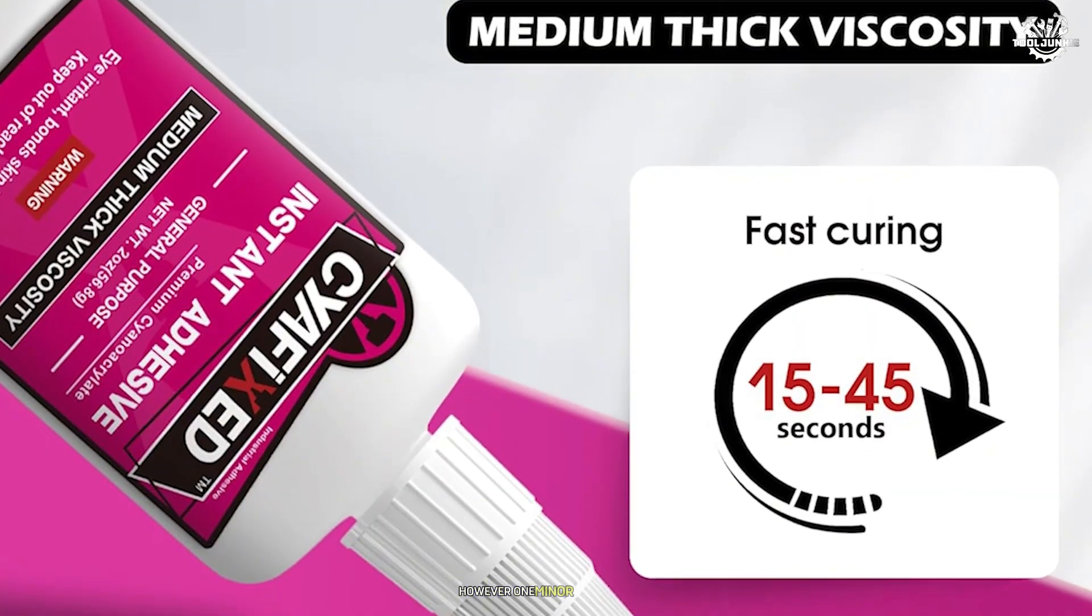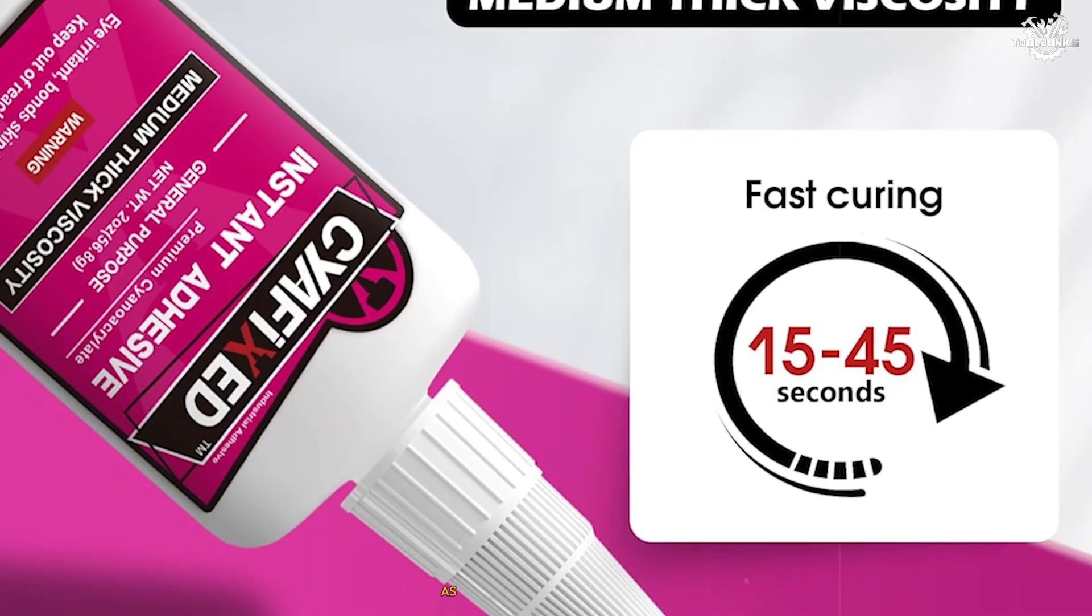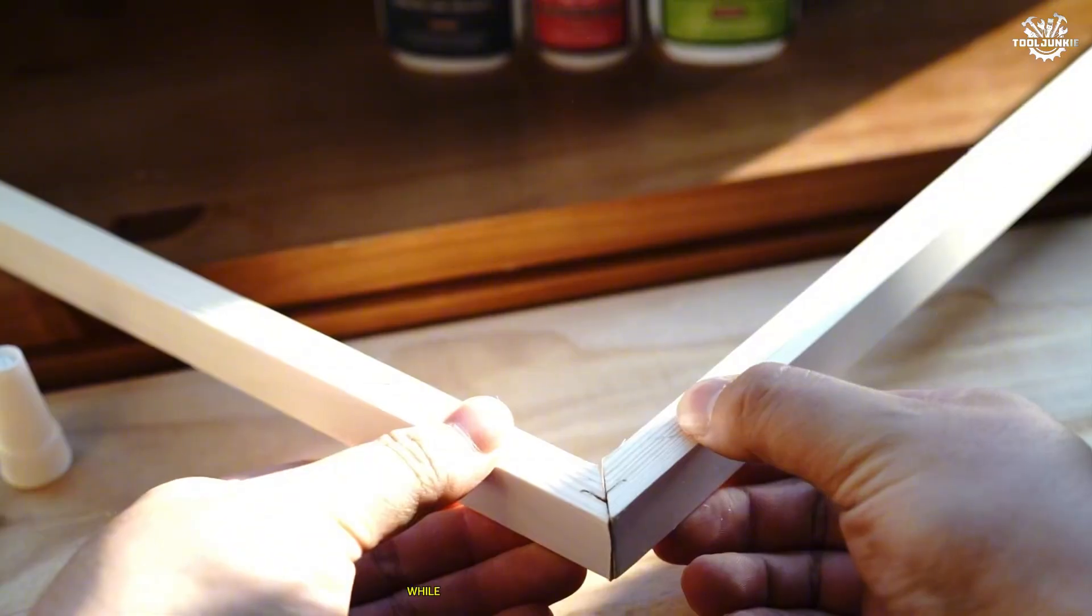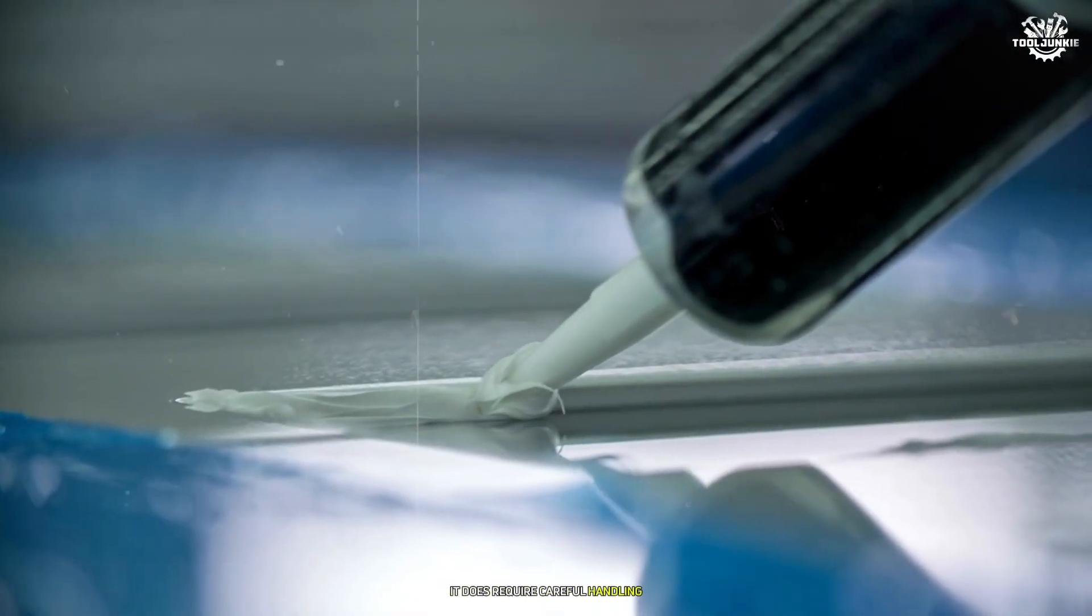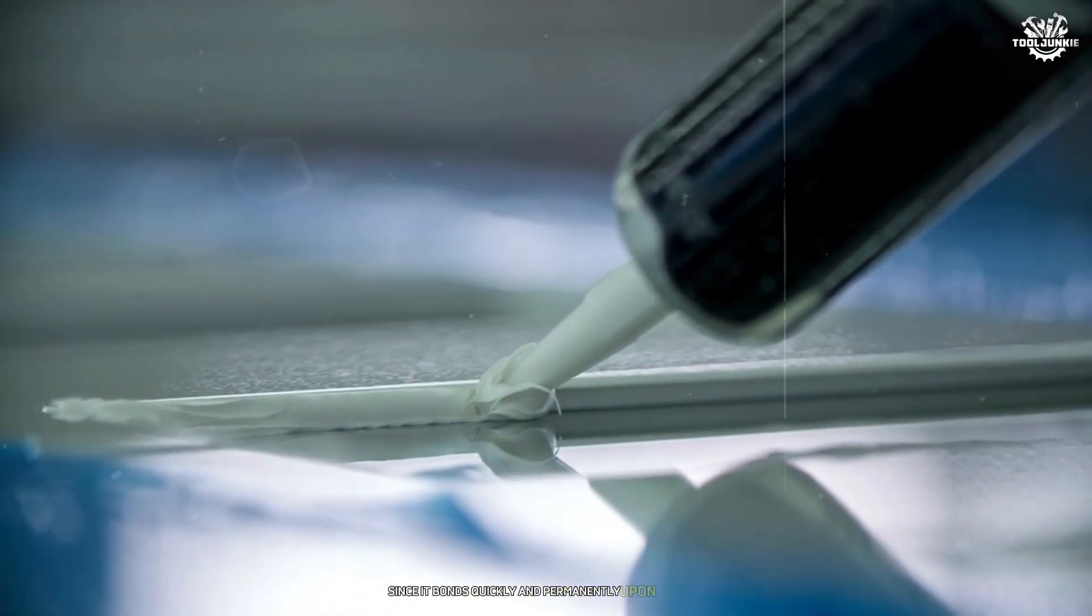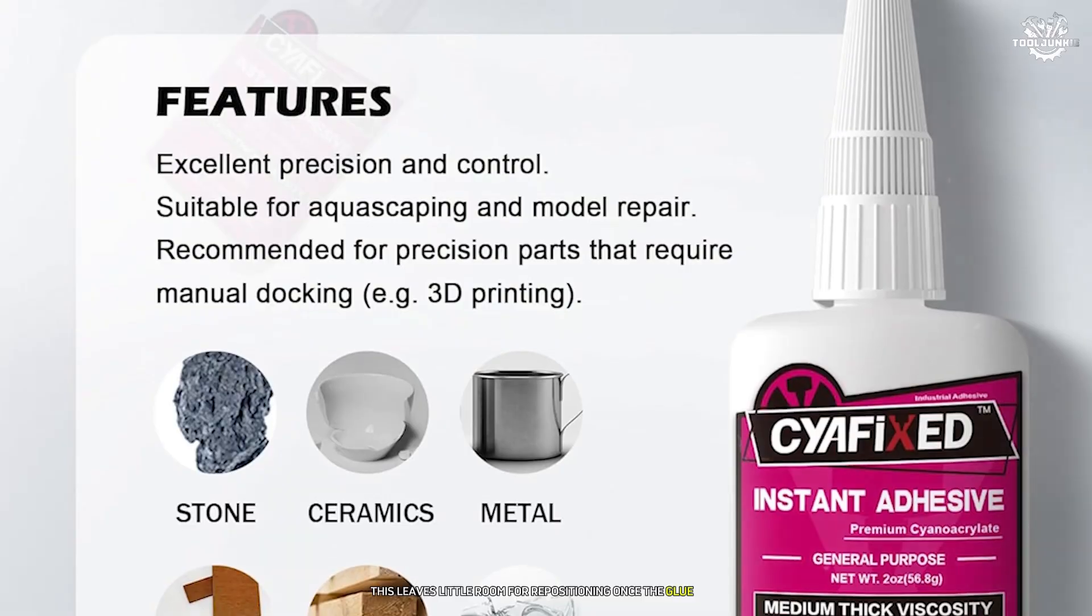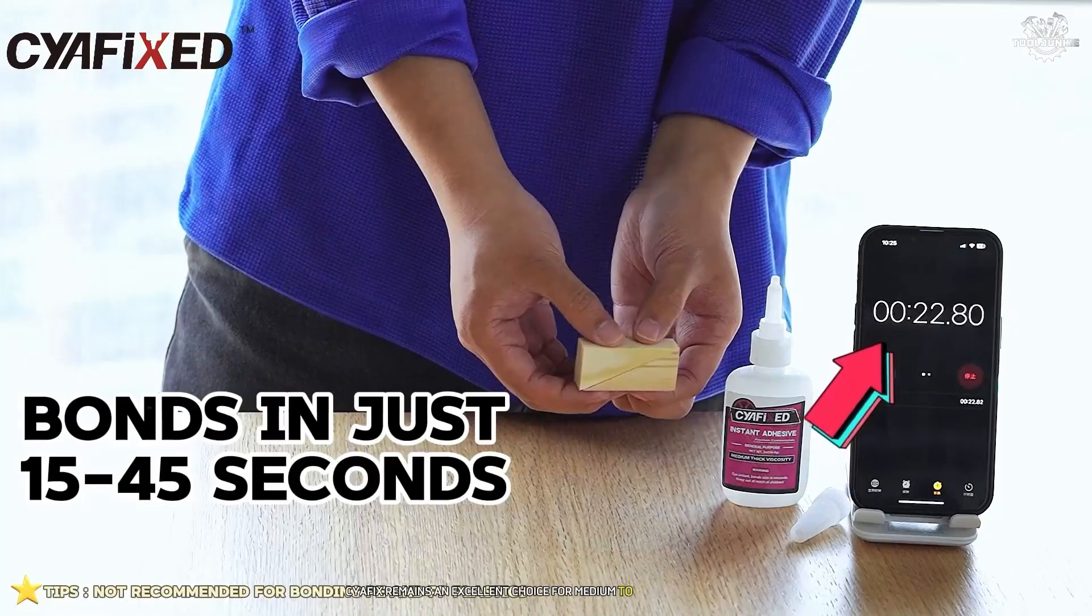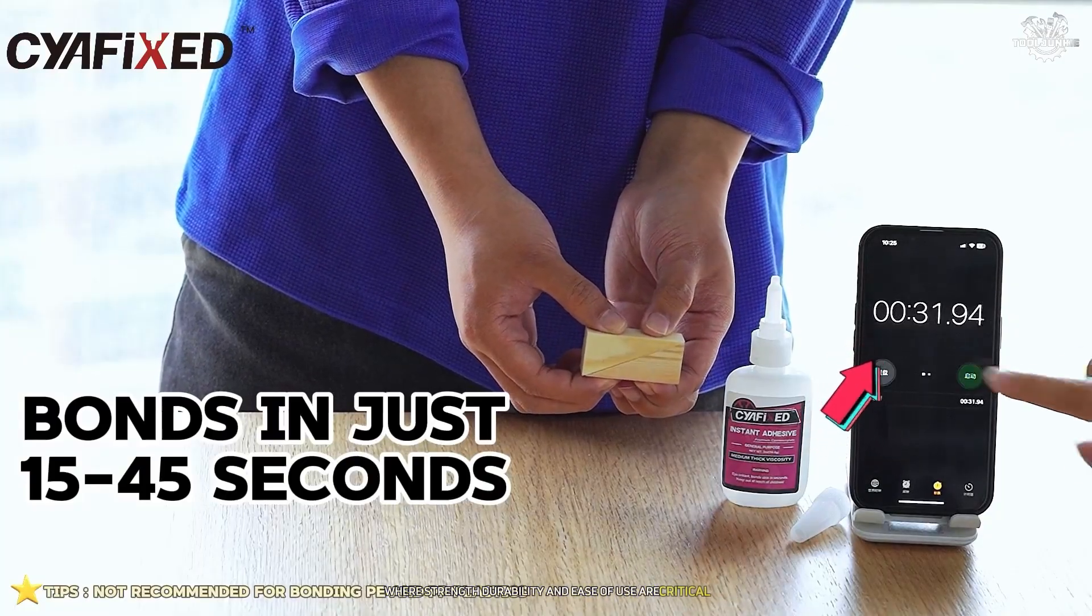However, one minor drawback is that its medium viscosity might not penetrate very tight spaces as effectively as thinner adhesives like Starbond. While CiaFix excels in strength and versatility, it does require careful handling since it bonds quickly and permanently upon contact. This leaves little room for repositioning once the glue sets. Despite this limitation, CiaFix remains an excellent choice for medium-to-large PLA projects where strength, durability, and ease of use are critical.